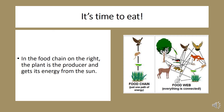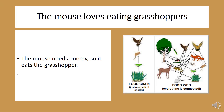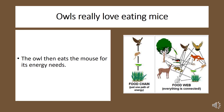At the bottom we have the plant, which is the producer — remember, producers get their energy from the sun. The grasshopper is a consumer; it gets its energy from eating the plant. The mouse is a consumer and needs energy too, so it eats the grasshopper. The owl is also a consumer, so it eats the mouse for its energy needs.